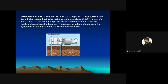In flash steam plants, it is not steam that comes up but hot water. That hot water is forced through nozzles at high pressure, and the pressure release converts it into water vapor. The vapor runs the turbine, and the cold water produced as a byproduct is pumped back into the ground.